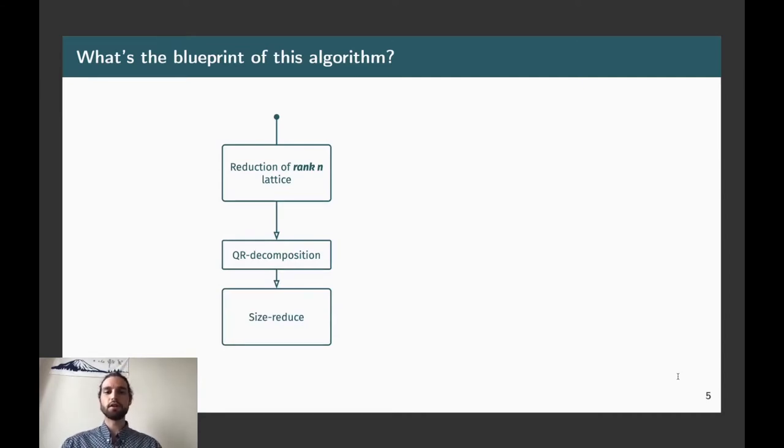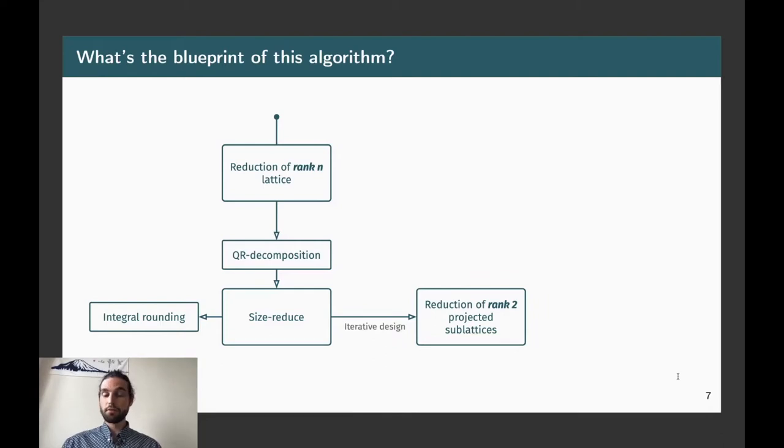And then we're going to apply a procedure, which given as an input, the QR decomposition will allow us to reduce slightly the size of the vectors. This will allow us to, using integral roundings to find shorter vectors and to control the size of the coefficients appearing during the reductions. Once we've done that, through an iterative design, the algorithm will call the reduction of rank 2 projected sublattices. I'm not entering into more details here, but the basic idea behind the algorithm is that there is a polynomial time reduction from the reduction of a rank N lattice to the reduction of numerous, but still polynomial, numbers of rank 2 sublattices.